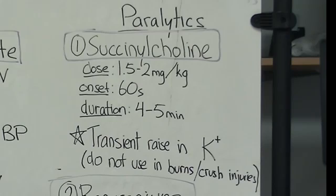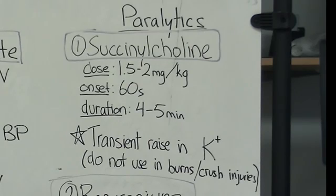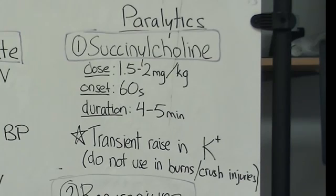Succinylcholine is dosed at 1.5 to 2 mg per kg IV. It has an onset of about 60 seconds, and it is important to wait the full 60 seconds before you attempt intubation, as your patient may not be adequately paralyzed. Succinylcholine has a duration of 4 to 5 minutes.